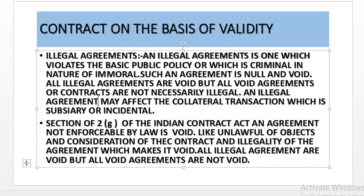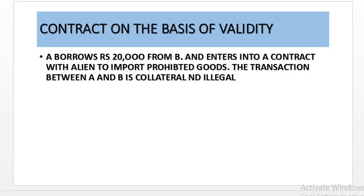Section 2G of the Indian Contract Act — an agreement which is not enforceable by law is void. Where the object is unlawful or the consideration is unlawful, we say it is illegal. The nature of the illegal agreement makes it void. All illegal agreements are void, but all void agreements are not illegal. For example, A borrows Rs. 20,000 from B and enters into a contract with an alien to import prohibited goods — this is against the law, so it is an illegal agreement. Here the transaction of borrowing Rs. 20,000 from B is collateral or incidental to the main transaction, so it is also illegal.